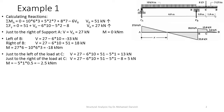Now we need sections to the left and right of C. The section left of C gives V equal to 27 minus 6 times 10 plus 51 minus 5 times 1. The section right of C gives V equal to 27 minus 6 times 10 plus 51 minus 5 times 1 minus 8. So the value before C is 13 kN and after C is 5 kN.